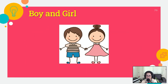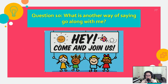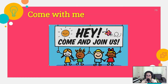But if you answered without an 'S,' it's okay — as long as there's a boy and a girl. Next question: Question number ten. What is another way of saying 'go along with me'? It has three words. Voice out your answer in five seconds. One, two, three, four, five. Answer. The answer is 'come with me.'